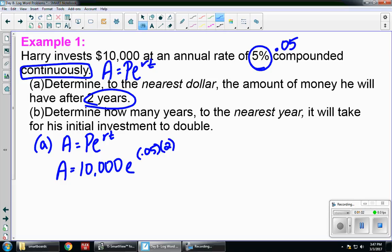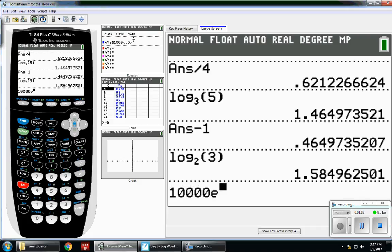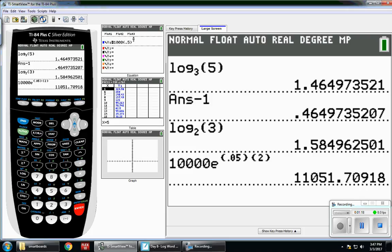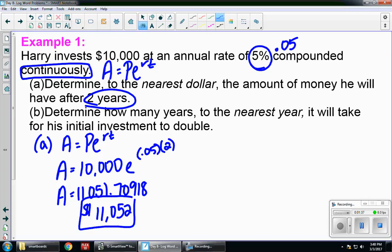So this gets plugged right into my calculator. 10,000. Second, LN will give you the E. 0.05 times 2. 11,051.70918. They wanted it to the nearest dollar, which is no decimals. So 11,052, because that 7 told me to round up.